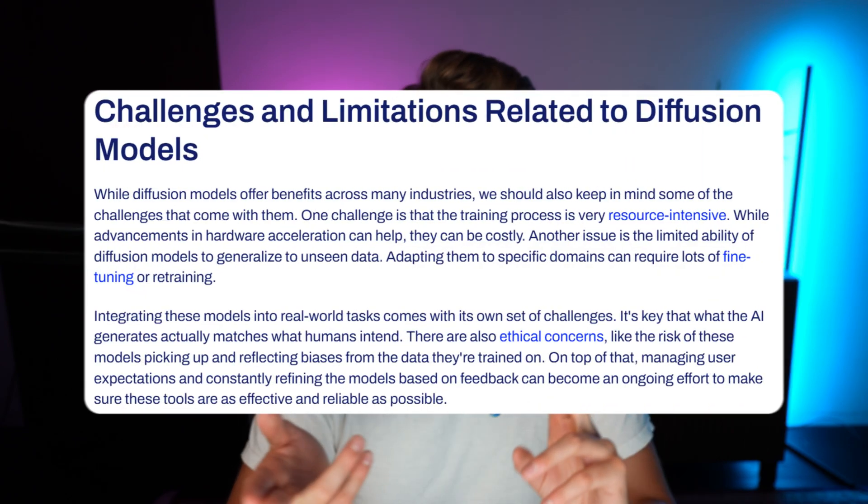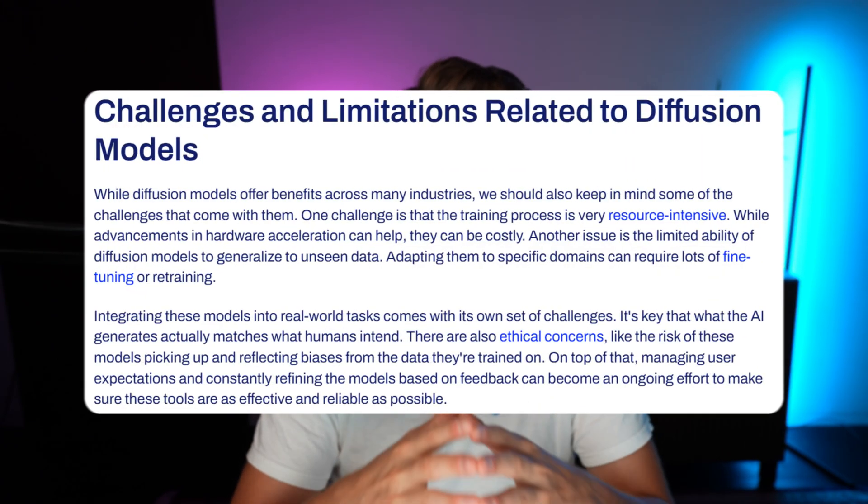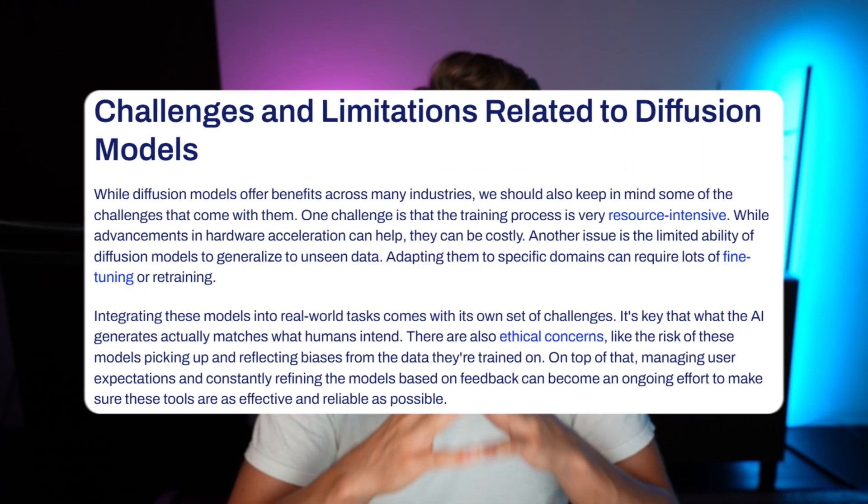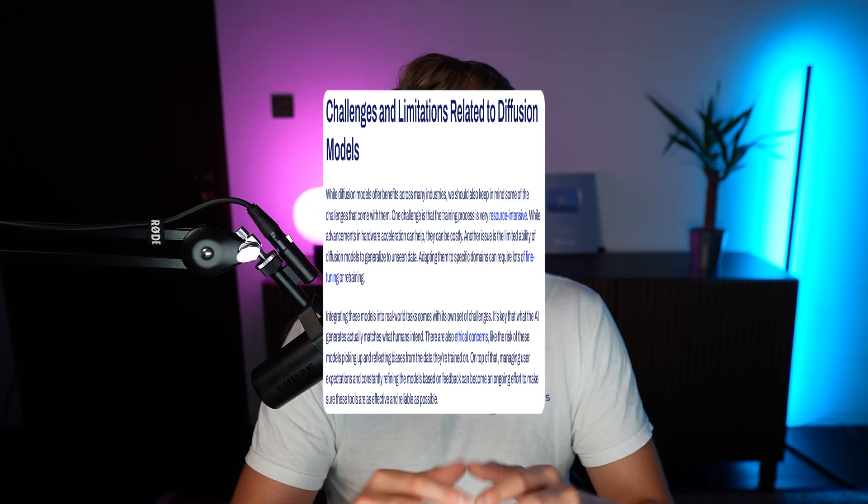There are still some challenges and limitations — they're of course not perfect. As mentioned, they need a ton of data. When you look at the good models like DALL-E 3 from OpenAI, Sora, Text2Video, Stable Diffusion and so on — these are huge companies with lots of resources. We need internet-scale video and image datasets, and also a ton of GPU compute to be able to process all this and train these diffusion models.